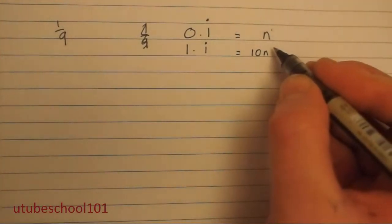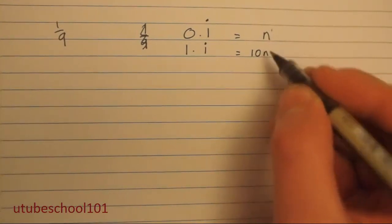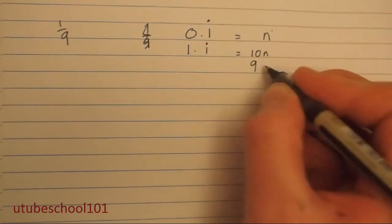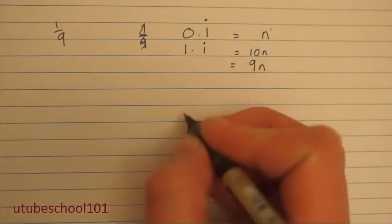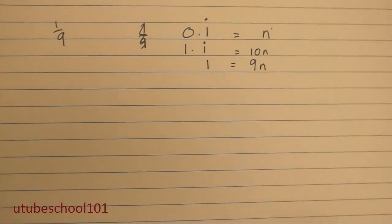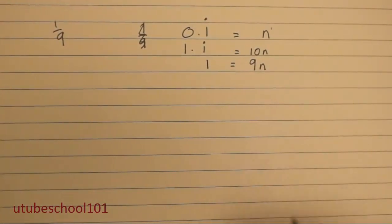What we're about to do now is we're going to subtract the n from 10n, so we're going to get 9n. So 9n is going to equal 1. So you may see where it's going now.